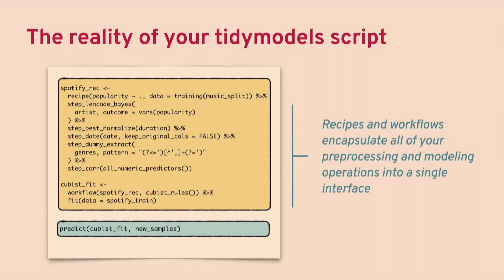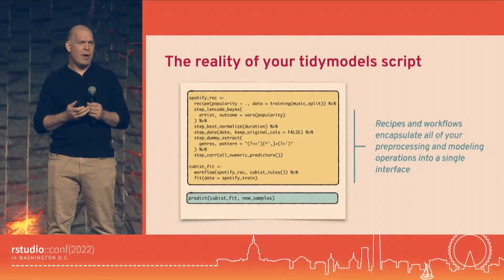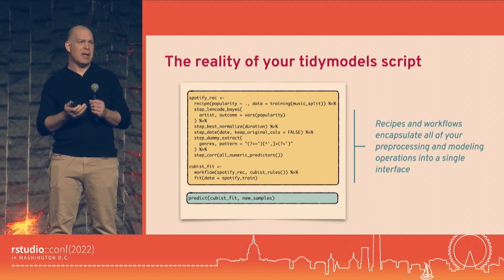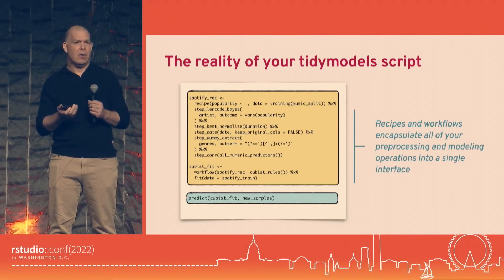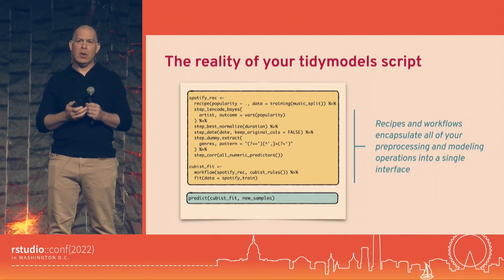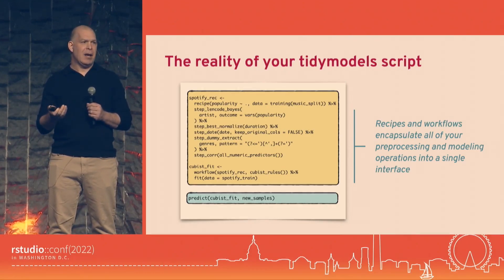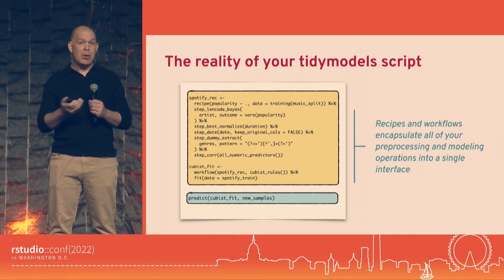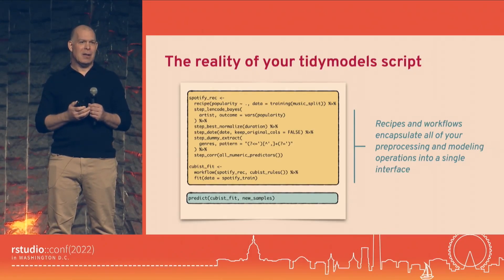You might end up with quite a lot of variables from the genres, and you might think you have too many to put in your model. So you might want to do some unsupervised feature filtering to remove redundant predictors. step_corr() can actually remove predictors where pairwise correlations are too high. All these things you can put into a single object, save it, carry it around — it's not buried in a bunch of scripts, it's been unit tested and has a lot of features.